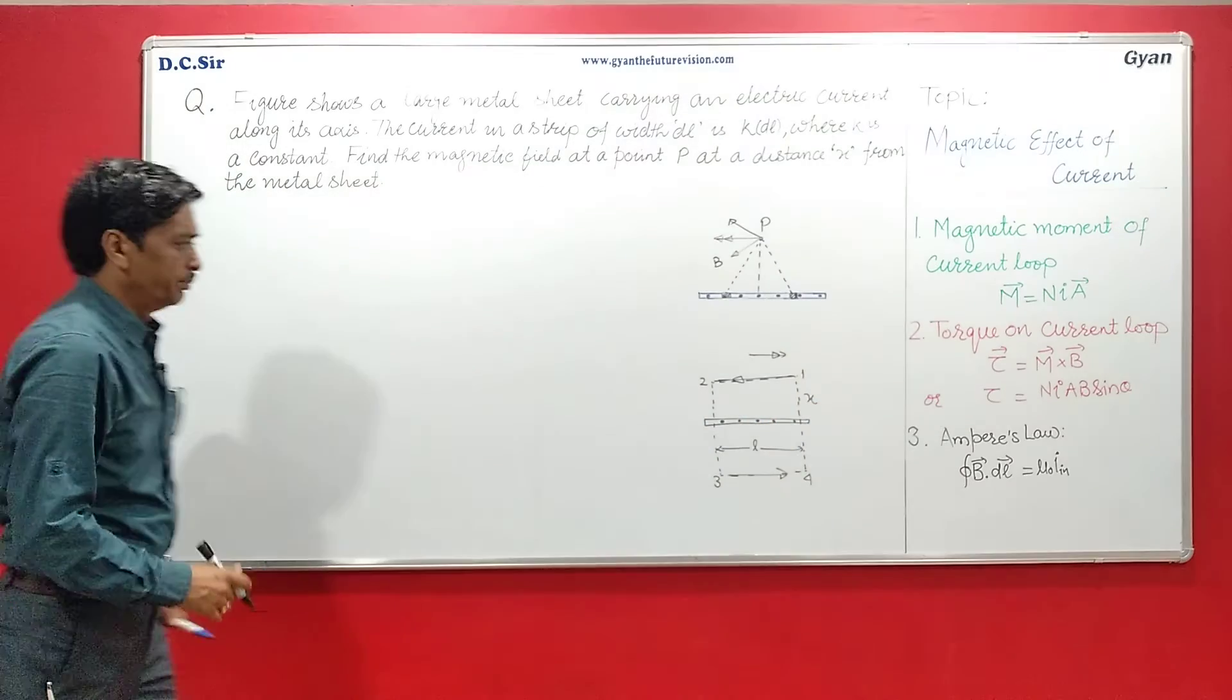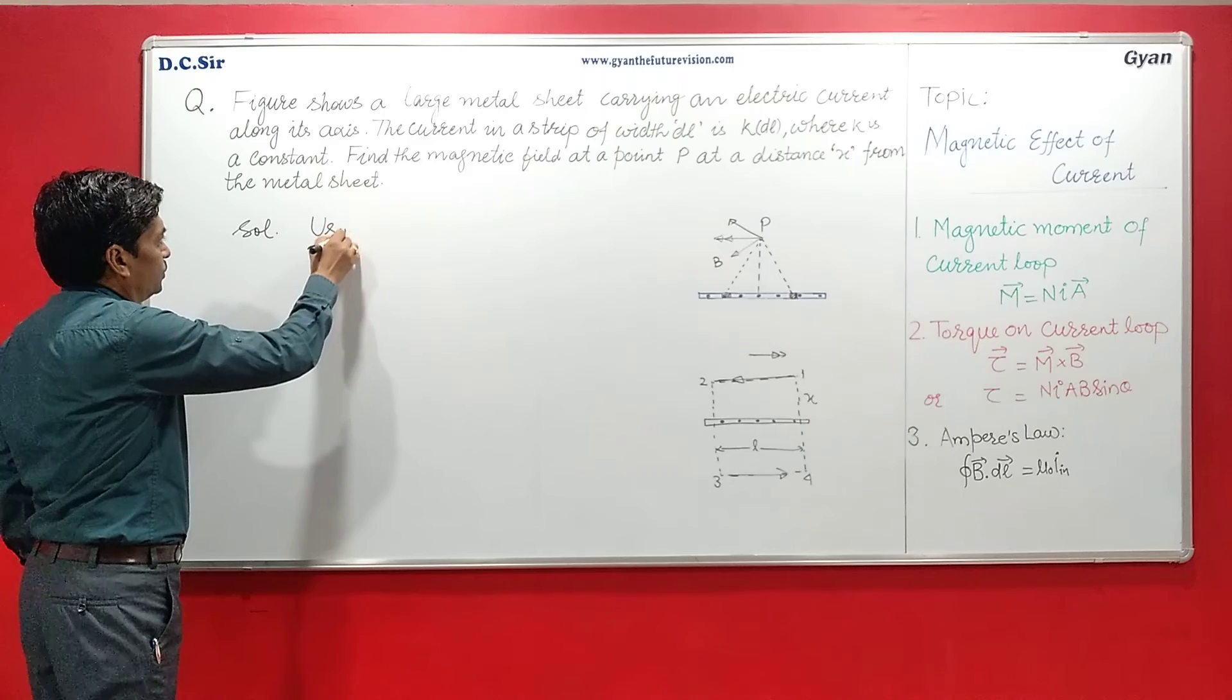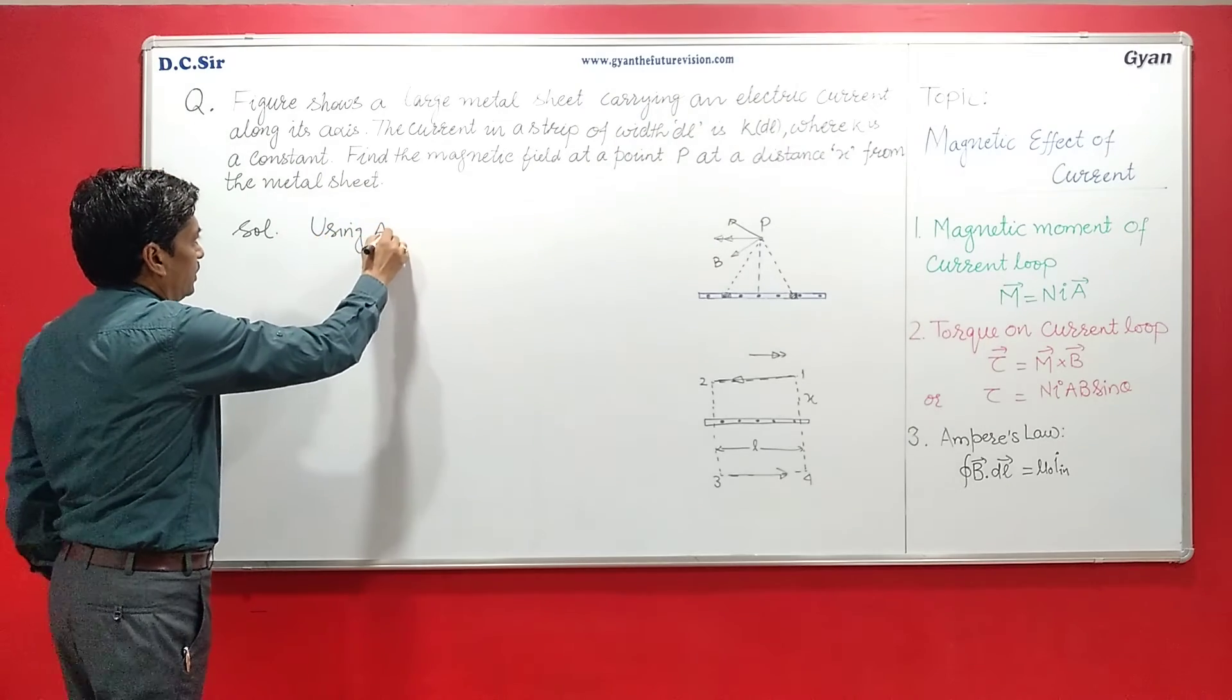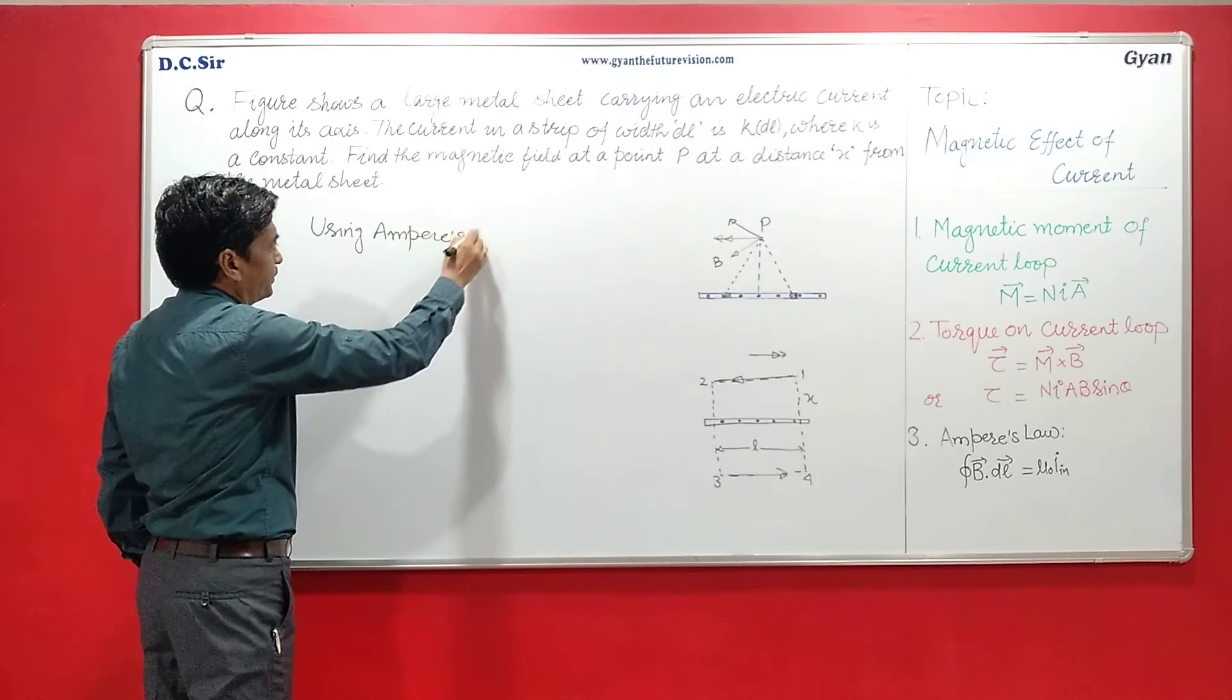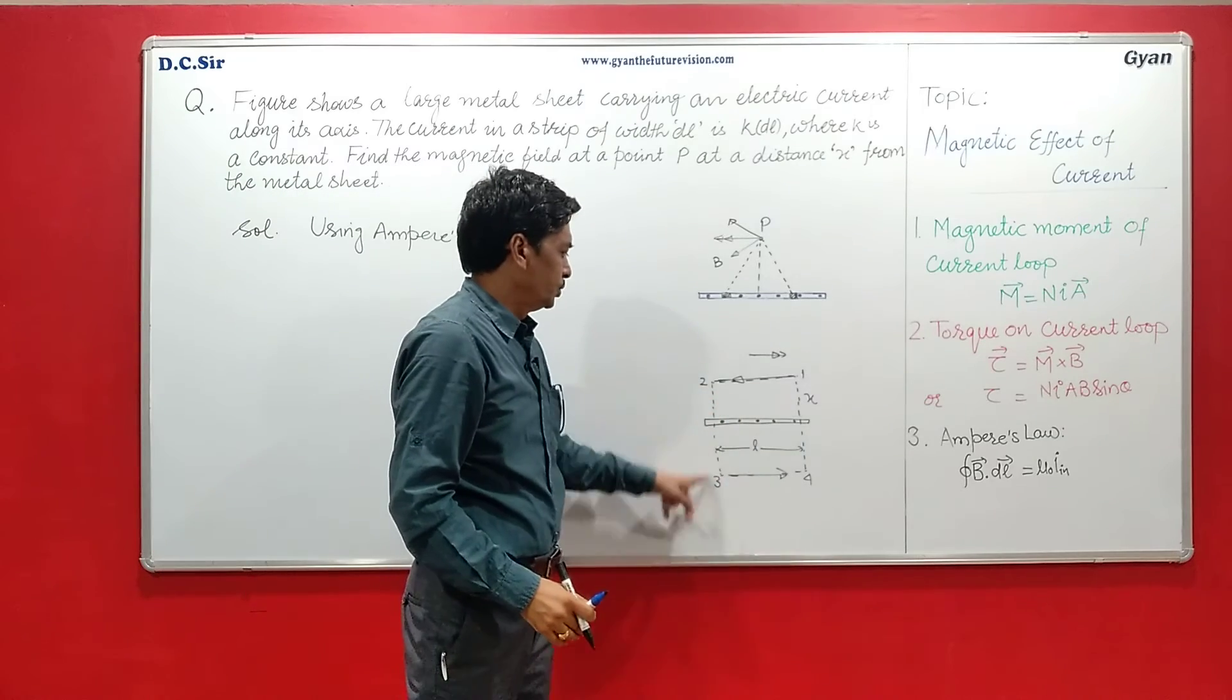By using Ampere's law for the closed loop here 1, 2, 3, 4, 1, we can write ∮ B·dL over closed loop is equal to μ₀ and the current inside the loop.